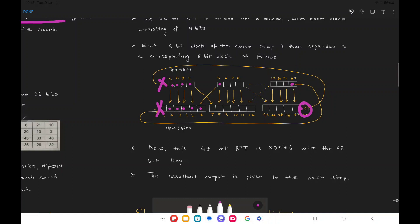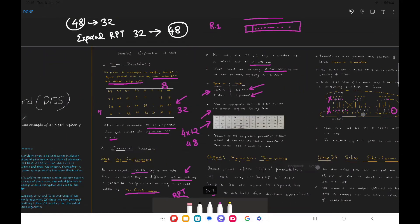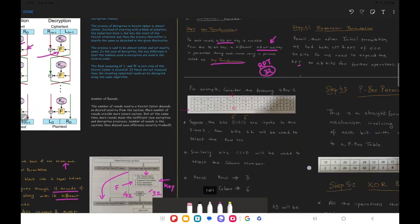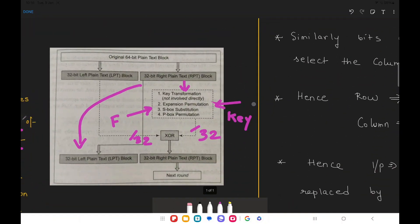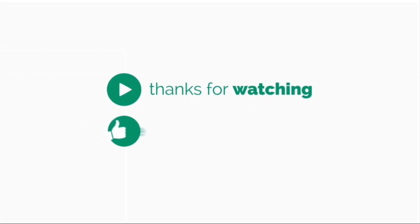That is what expansion permutation is all about. At the end of this step, we will get an expanded RPT—a 32-bit RPT will now become a 48-bit RPT. Why are we doing this? It is very simple: we cannot encrypt a 48-bit key with a 32-bit RPT, so for that purpose we are going to make use of expansion permutation.